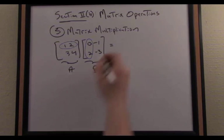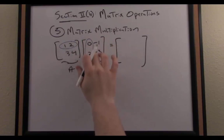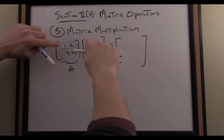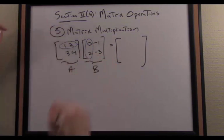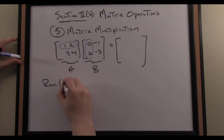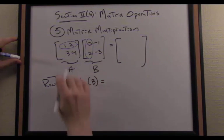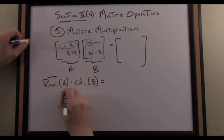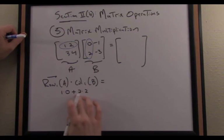When I dot 1 2 that vector with 0 2, I multiply the first components together. I get 1 times 0 plus 2 times 2. So let me write this as row 1 of A, that's a vector, dotted with column 1 of B. When I perform this operation, I go 1 times 0 plus 2 times 2, that gives me 0 plus 4, so I place the number 4 here.